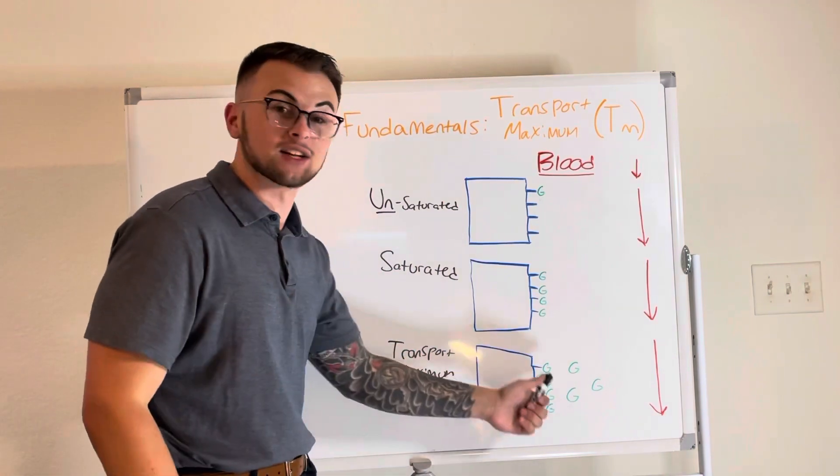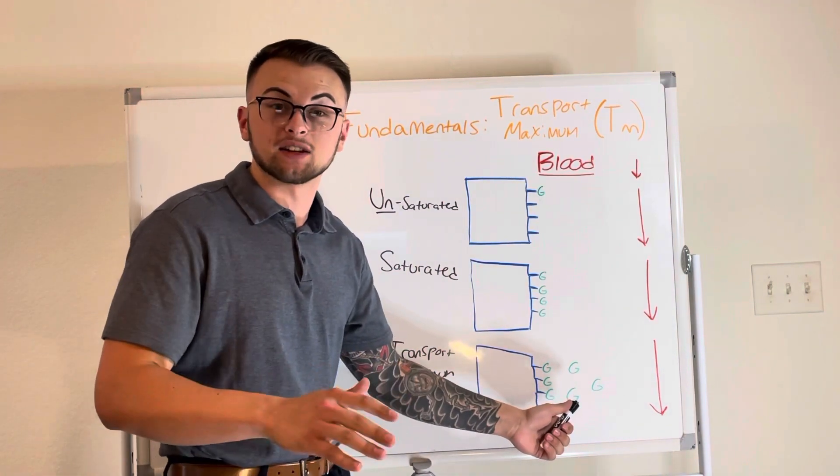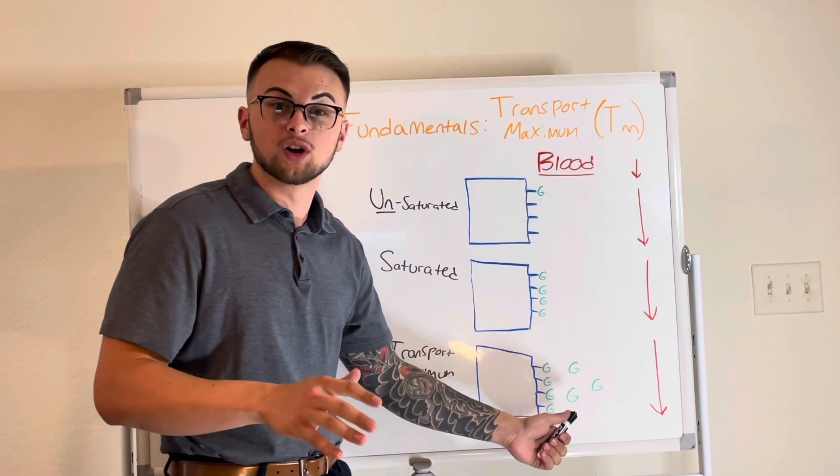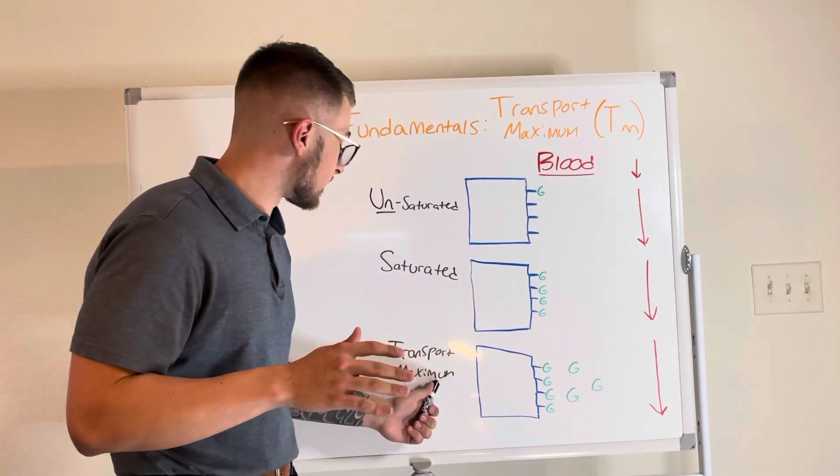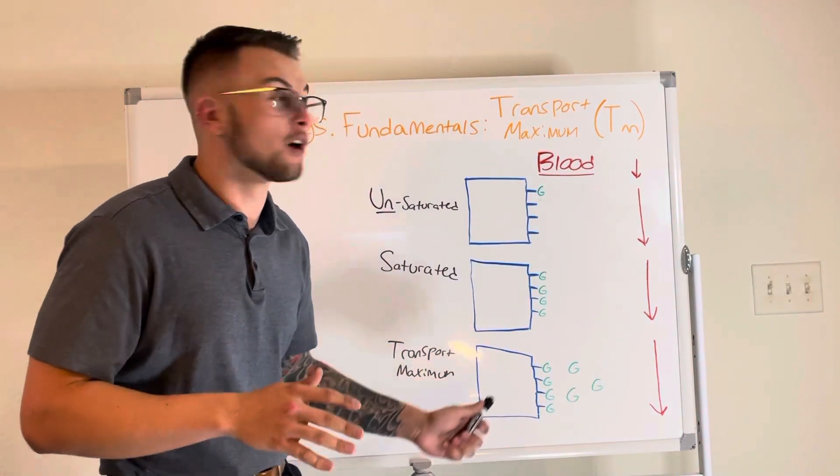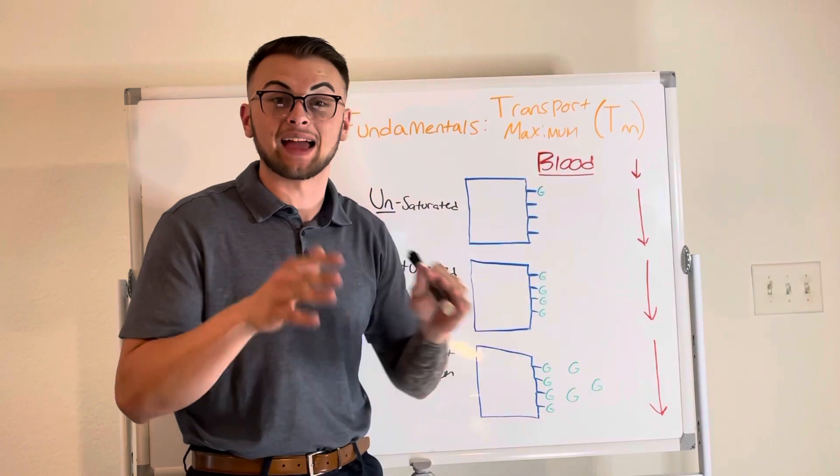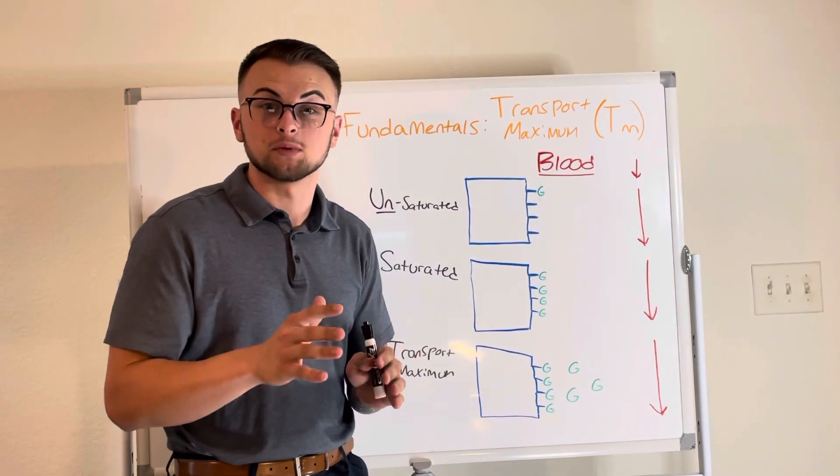Now, the exact moment when the glucose people come to sit on the bus and there are not enough seats for every glucose, we say that the bus or transporter is at its transport maximum, or Tm. At this point, some glucose people will not have a seat and will be taken somewhere else.